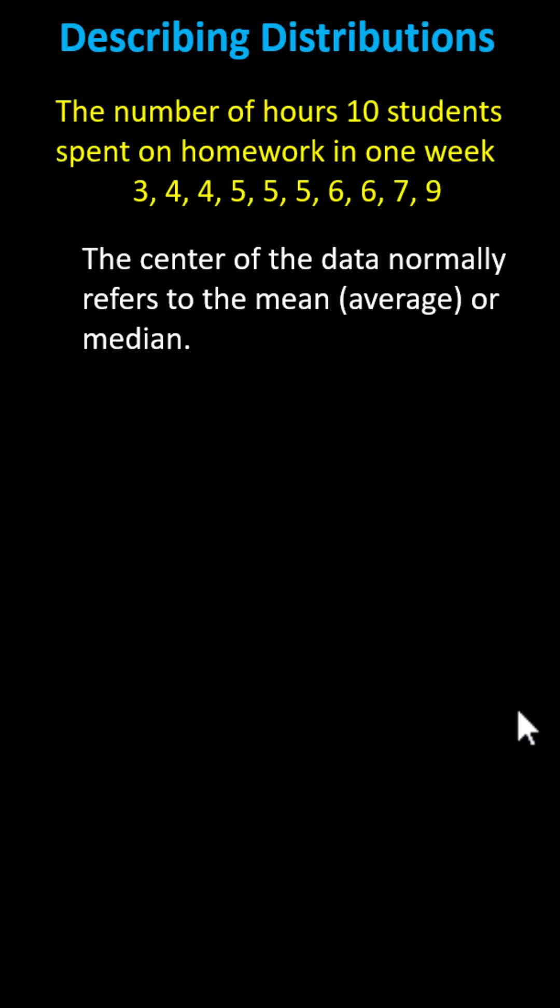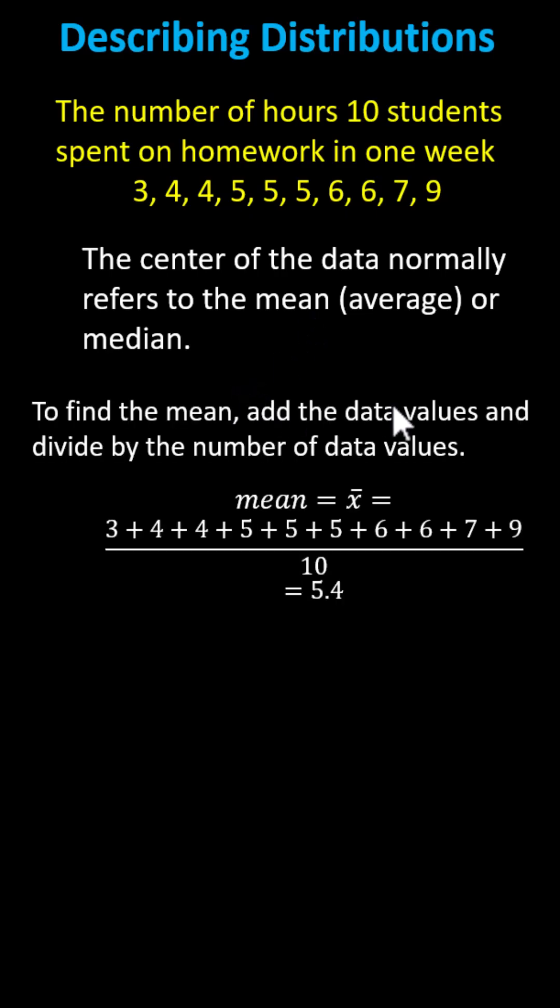The center of data normally refers to the mean or the median. The mean is the same as the average. To find the mean, we add all the data values and divide by the number of data values. So here we see the sum of all the data values divided by 10. The mean or average is 5.4.